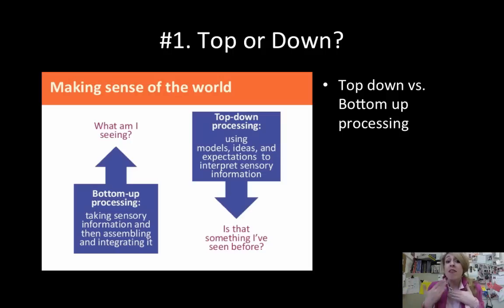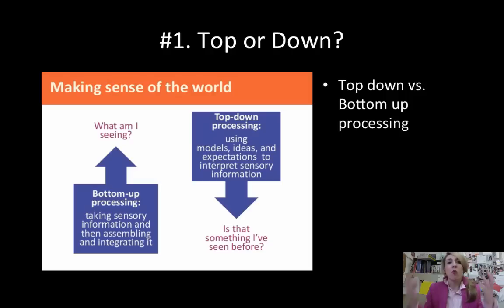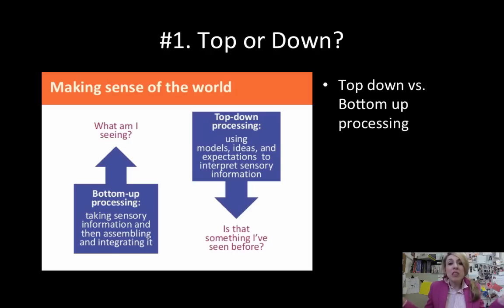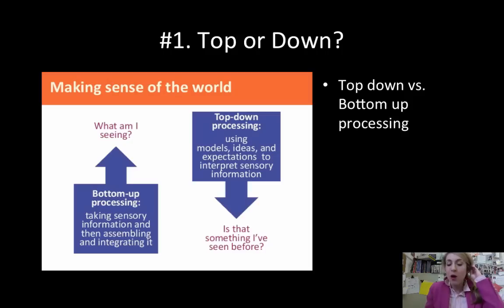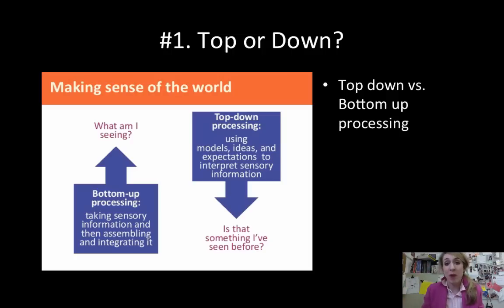Top-down processing is where your brain almost tells your eyes, your ears, whatever, what to expect — it tells you what to see or hear or smell as opposed to what's actually there. Top-down is basically perception. Almost everything you do is a combination of bottom-up and top-down now that you've been alive for so long. When you're younger, you experience a lot of things through bottom-up, but as you get older, your brain makes good guesses ahead of what might really be there.